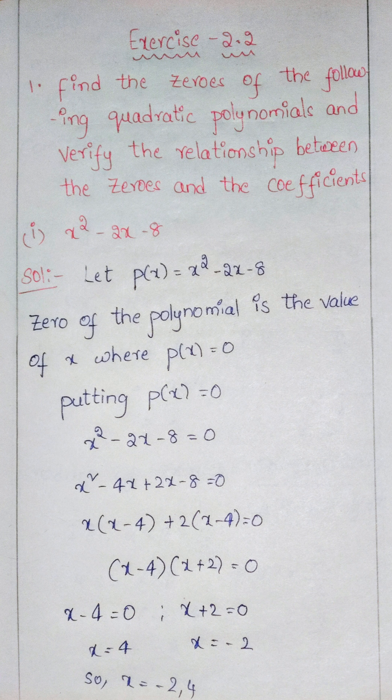x into (x minus 4) plus 2 into (x minus 4) equals 0. Here (x minus 4) is common, so taking it out: (x minus 4)(x plus 2) equals 0. Dividing into two: x minus 4 equals 0 or x plus 2 equals 0. So the x values are 4 and minus 2.